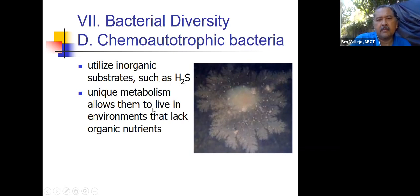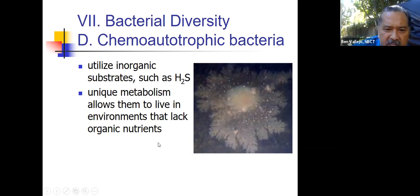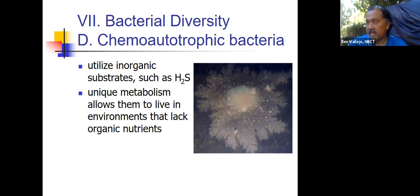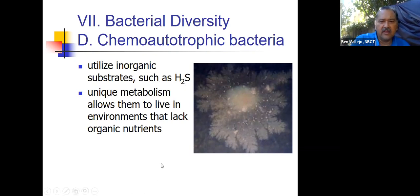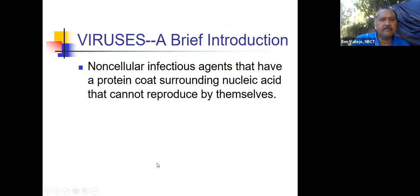Their unique metabolism allows chemoautotrophic bacteria to live in environments that lack organic nutrients — remember organic has to do with carbon. These bacteria make their own food based on chemicals like hydrogen sulfide. There are others they could use as well.